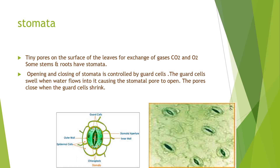The stomata has an opening which is called the stomatal aperture. On either side of the stomatal aperture are present two bean-shaped cells which are called the guard cells. The guard cells contain an outer wall and an inner wall. The inner wall is thicker than the outer wall. There are many chloroplasts present in the stomata, and epidermal cells surround the stomata.